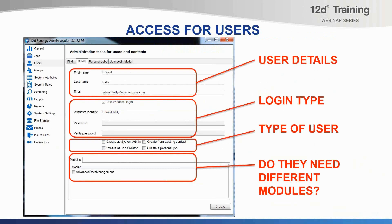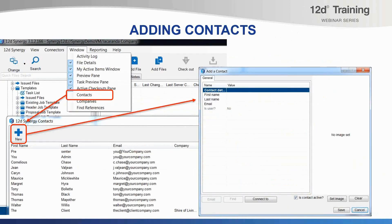So, adding users. For your users to access the system, we show the administrators how to assign them a license, set what type of user they will be, and if they need to have a different module. We'll also show you how to edit these details or remove a user from the system. We'll also show you how to add external contacts, and if required, how to link them to a company.